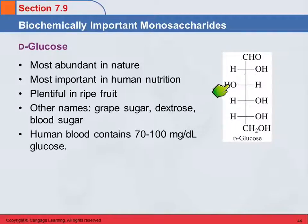The OH pattern for glucose is right, left, right, right. Glucose is the most abundant sugar in nature and the most important in human nutrition. It's found in ripe fruit and has been called grape sugar because ripe grapes have a lot of glucose in them. It's also known as dextrose or blood sugar.